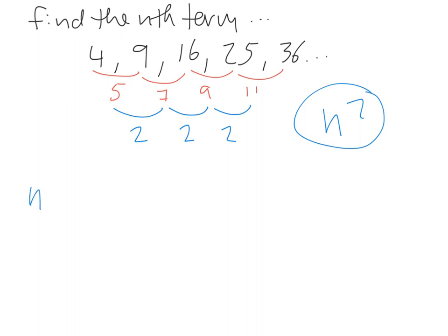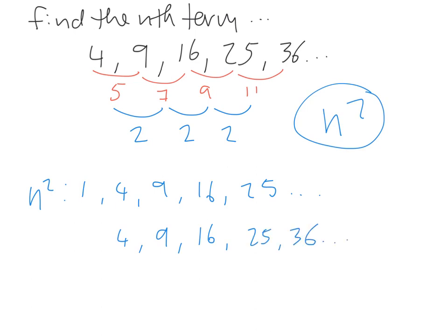Our normal n squared sequence starts at 1, because 1 squared is 1, then 4, then 9, then 16, 25... Our sequence, however, starts at 4. So our sequence is 4, 9, 16, 25, 36... It is the n squared sequence, but it's been moved up by one step. So the nth term for this sequence is n plus 1, all squared.